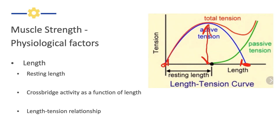The reason for this is the cross bridges formed between actin and myosin, the proteins in the sarcomeres, is a function of length. Near the middle of the length of a muscle fiber, we can form a lot of cross bridges. When the muscle is very long or very short, we can't form as many cross bridges, so the muscle proteins can't pull on each other as much. So a muscle is going to be strongest near its middle range of length — that's what we see in the blue curve.